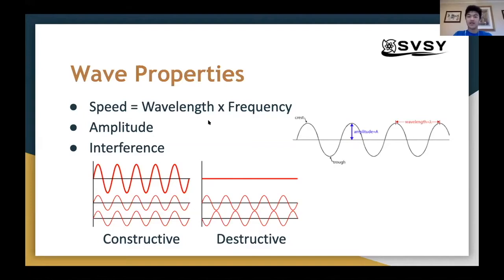We can think about what amplitude means in our daily lives because amplitude is usually the intensity of a wave. For light, a really bright light will have a very large amplitude. Frequency can tell us the pitch of a sound or the color of light — the higher the frequency, the higher the pitch. The higher the frequency, the more blue the color would appear if it's light. So those are physical manifestations of amplitude and frequency.